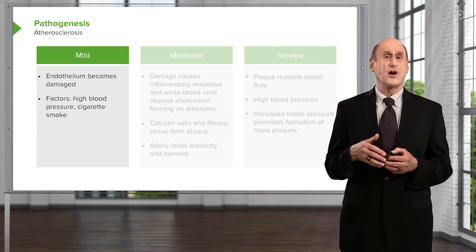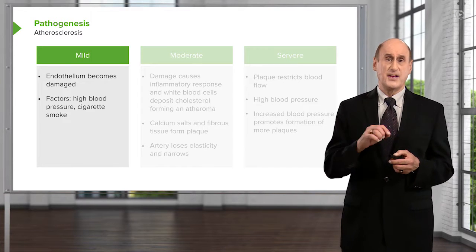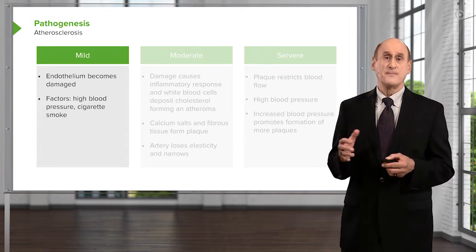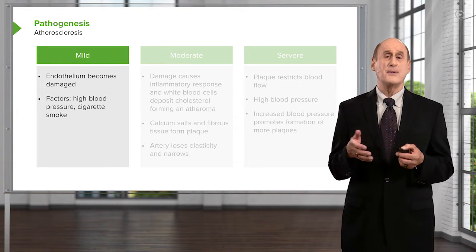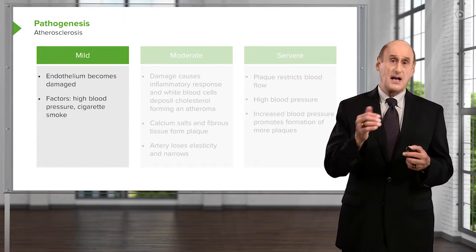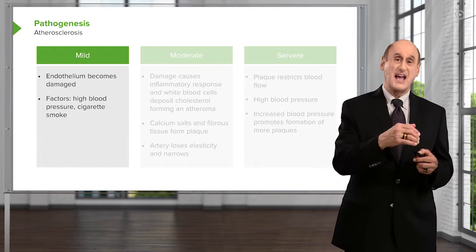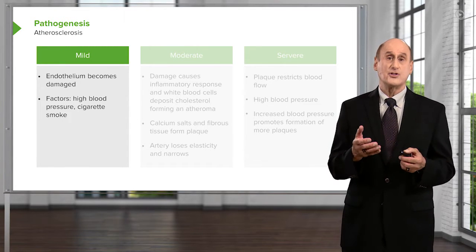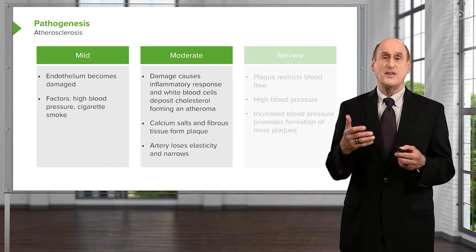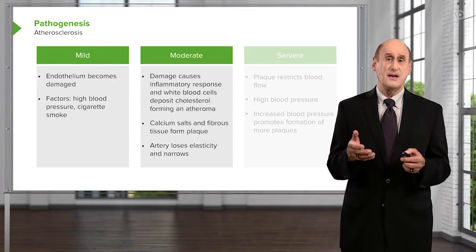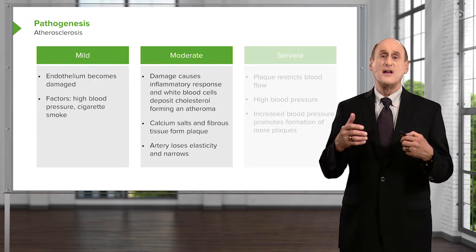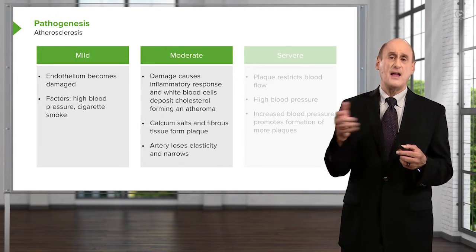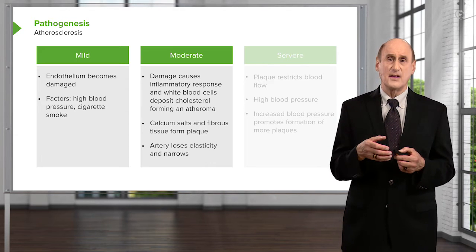Atherosclerosis usually starts as mild. The endothelium — the thin layer right next to the channel of the artery — gets damaged. Factors such as high blood pressure and cigarette smoke damage the endothelium, allowing LDL cholesterol, often in oxidized form, to get underneath and into the wall of the artery where it starts the inflammatory process. This advances to moderate atherosclerosis, where the inflammatory response — white cells coming in, trying to ingest the LDL cholesterol, then dying — forms a great stimulus to scar tissue formation and further arrival of LDL cholesterol in the area.